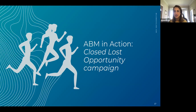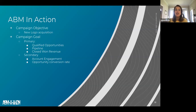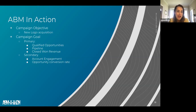Now I want to show you an example of an ABM campaign we ran at Terminus about a year ago. The campaign objective was new logo acquisition, and our primary goals were driving qualified opportunities, pipeline, and closed won revenue. From a secondary KPI perspective, we wanted to hit a certain account engagement percentage and set an opportunity conversion rate.